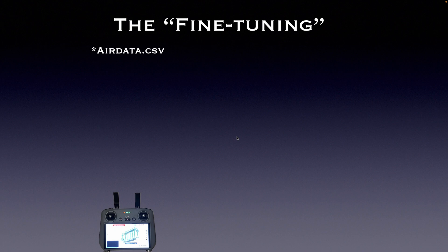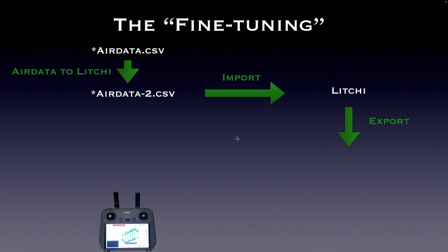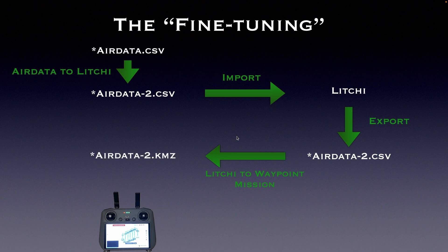To wrap up, let me summarize how the fine-tuning workflow looks. We start again with the exported CSV file from AirData. We use the AirData to Litchi utility to convert it into Litchi format. We then import this file into Litchi, do the fine-tuning as described, and export it again into a CSV file. Then, with the Litchi to Waypoint Mission utility, we convert it to a KMZ file and upload it into our controller.